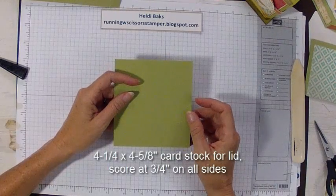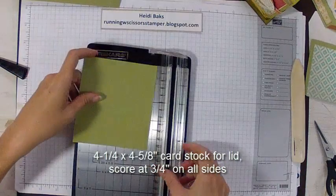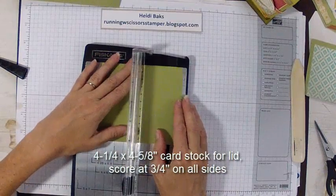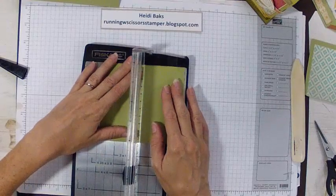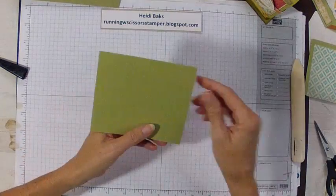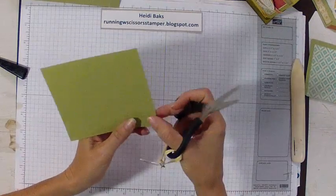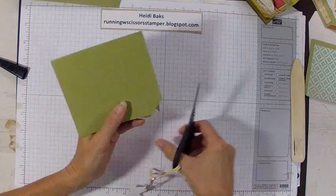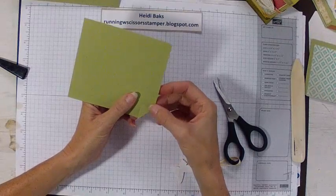Now you want to make the lid for your box. And that is, the measurements are four and a quarter by four and five eighths. And you can take your scoring blade again. And you're just going to score three fourths of an inch on all edges. And then what I did was I cut up the slit and then I tapered the edge for all four corners. So can you see that there? I'm cutting here and then I'm tapering this edge.